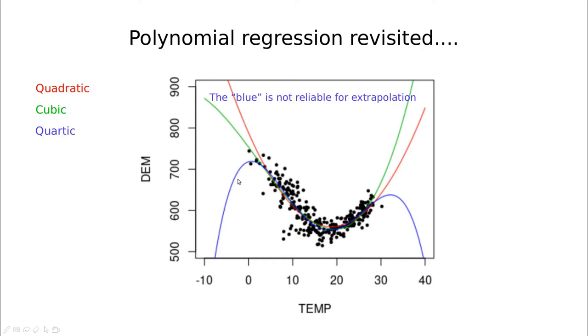So a fourth degree polynomial is going to escape into infinity really quickly. So in this case I would say that the red or the green are good enough. Maybe the green because it's capturing better this kind of bending here.